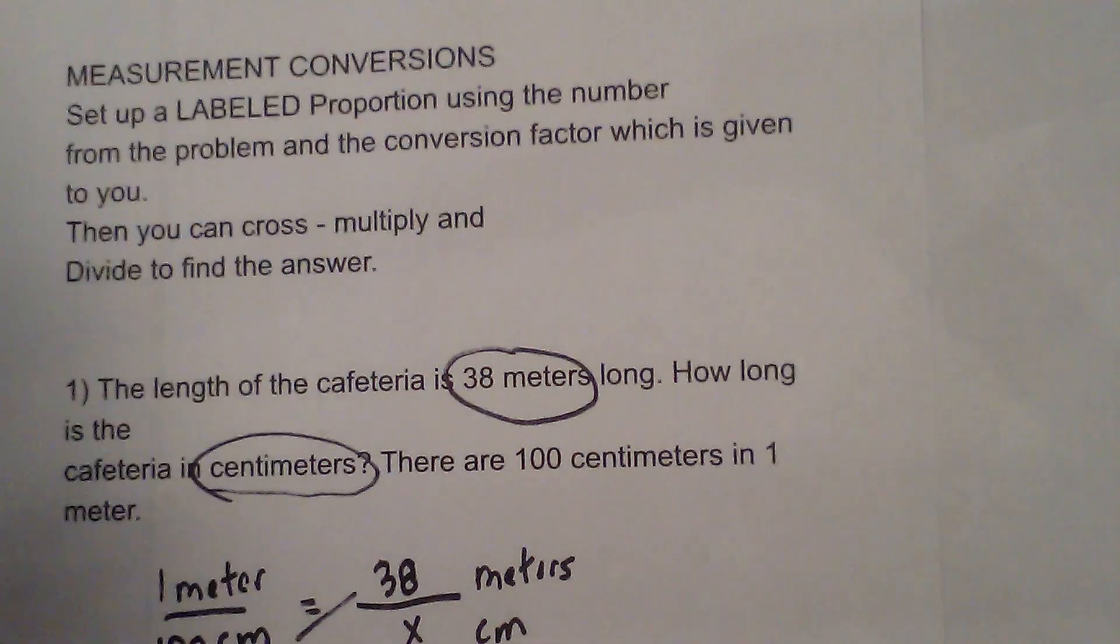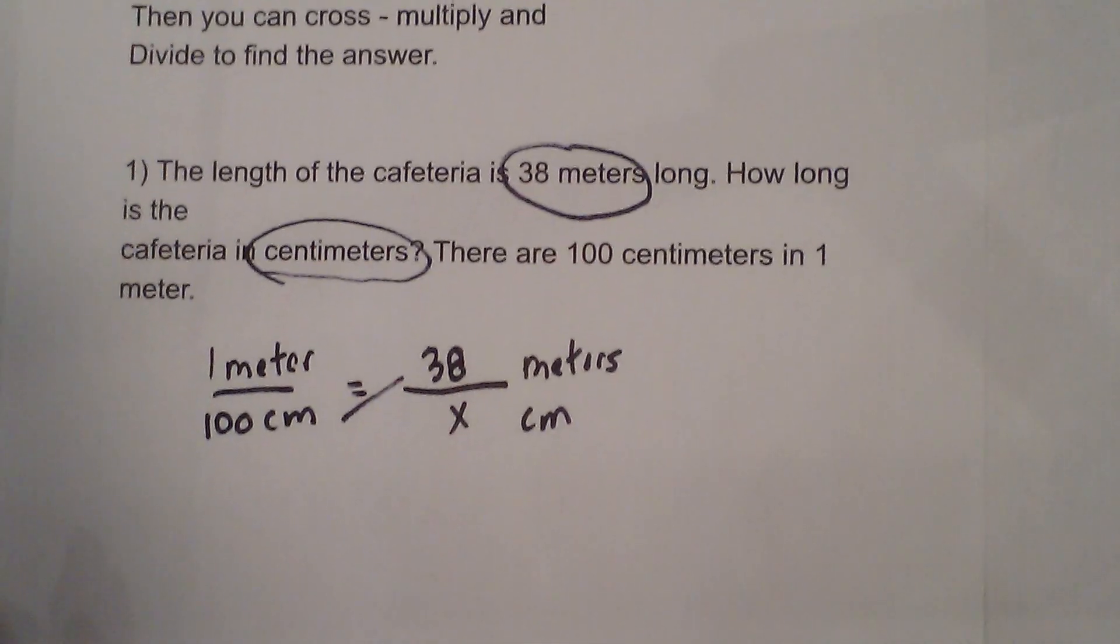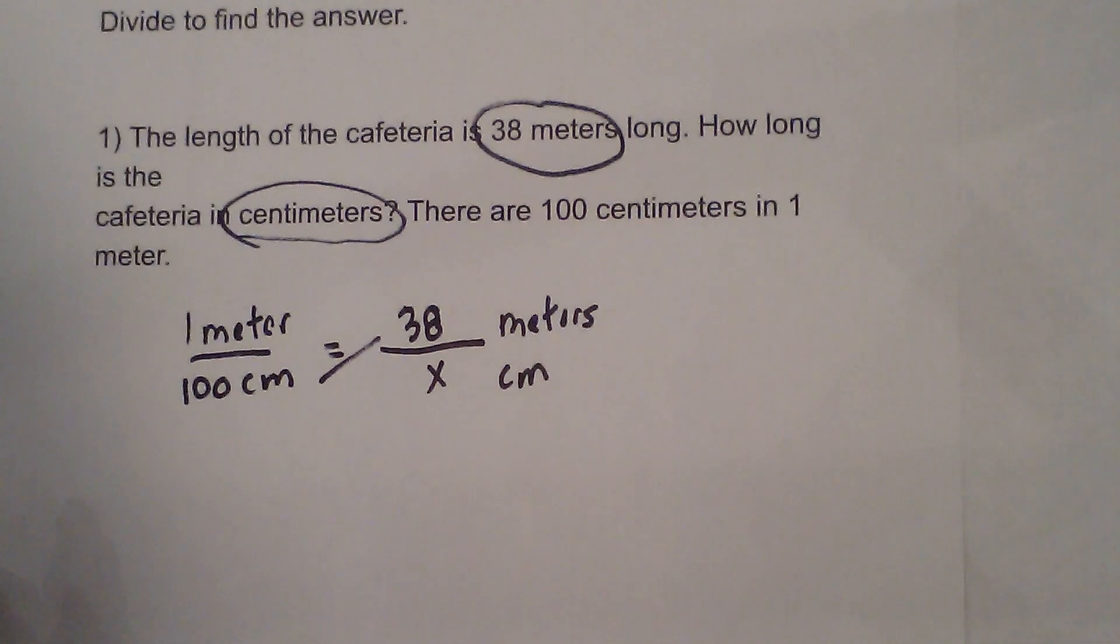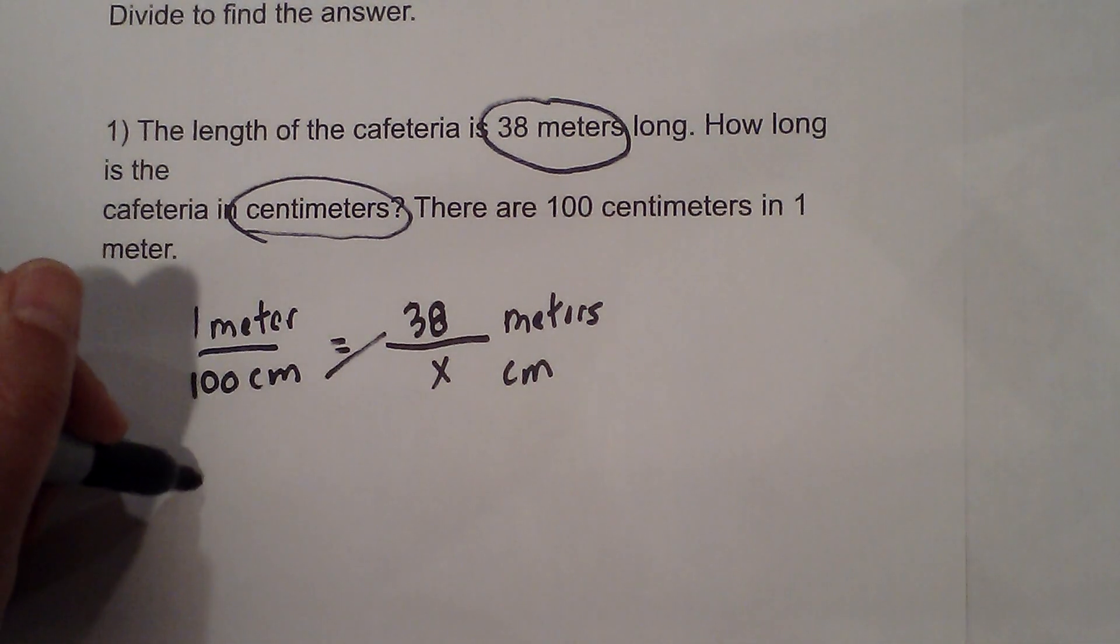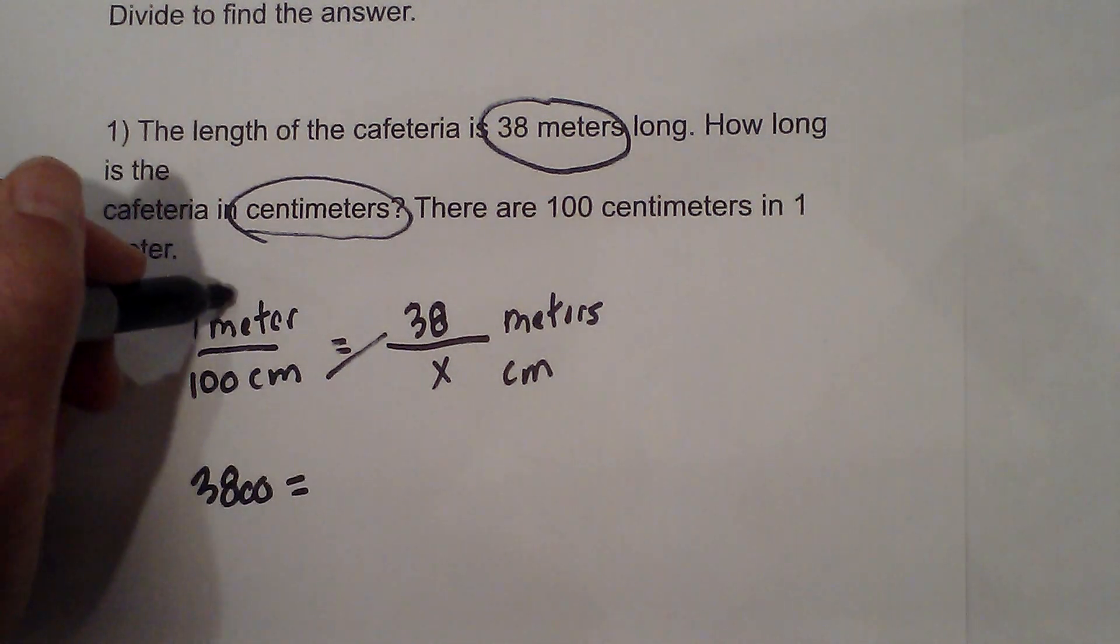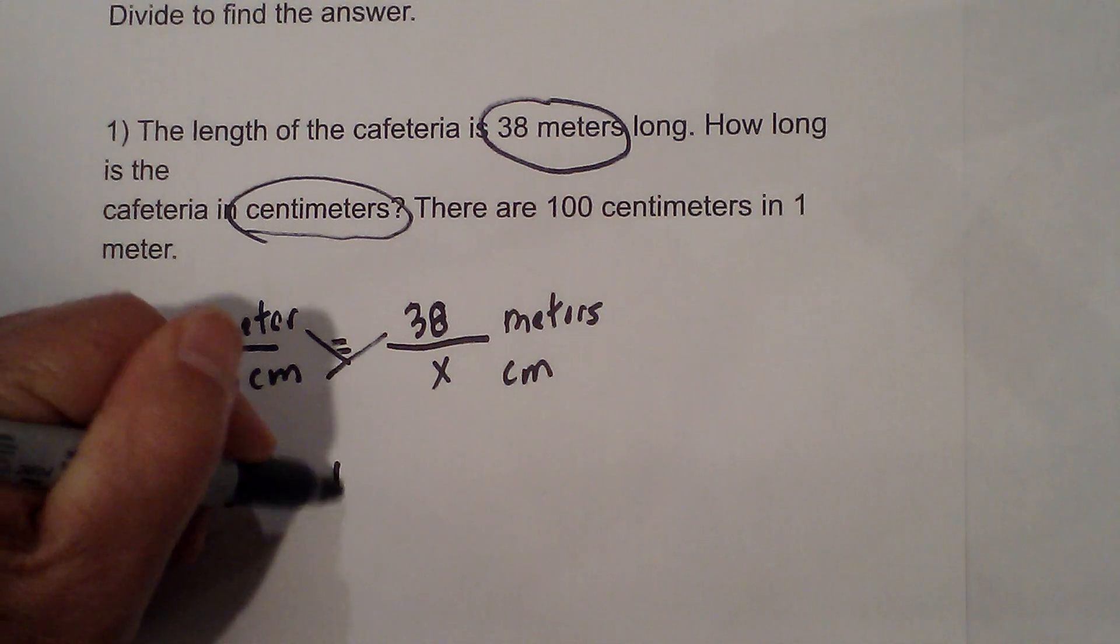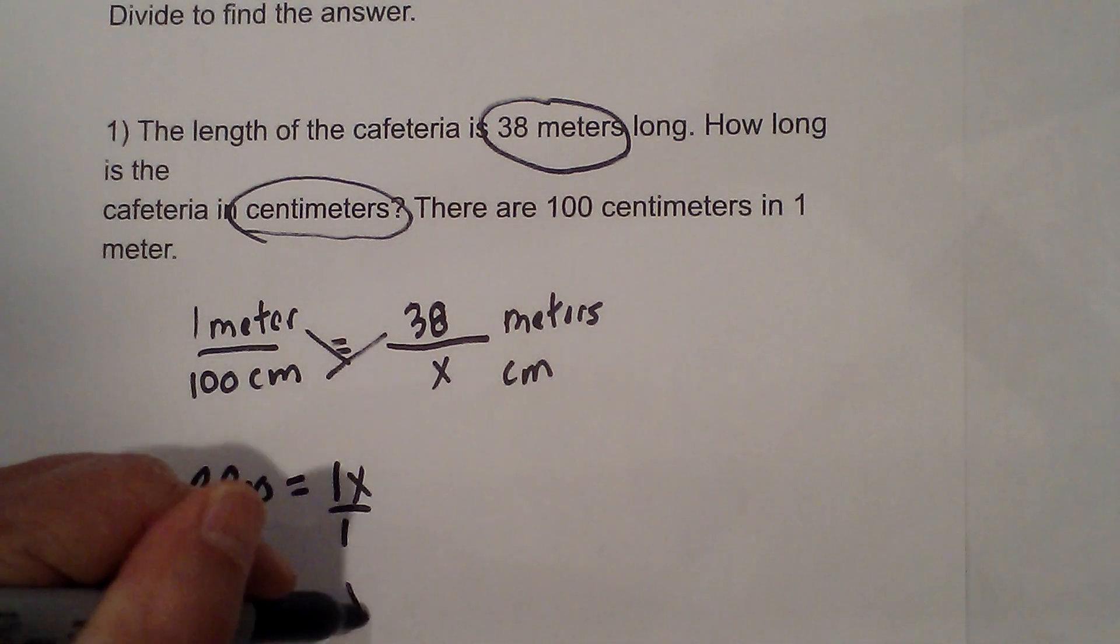So now we do a cross product. And now we have 38 times 100 is 3800 equals 1 times x is 1x and technically you would divide each side by 1.